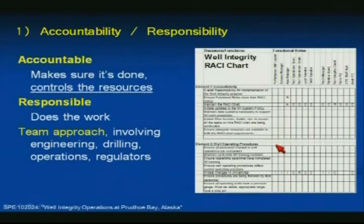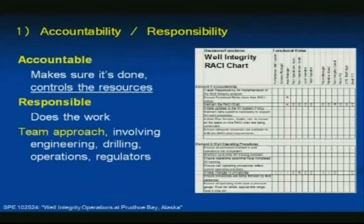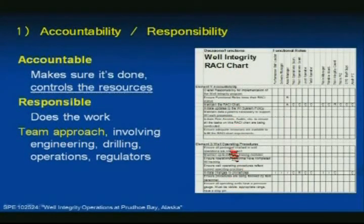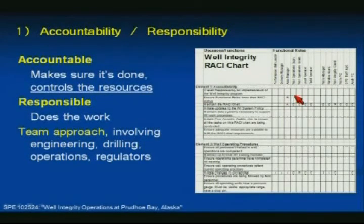Accountability and responsibility: the accountable person makes sure it gets done and, more importantly, they control the resources. What you'll hear from responsible people — the ones who do the work — is that they have a full plate. That accountable person ensures there are enough resources to get things done. There are a lot of tasks associated with managing a well-integrity program. We use RACI charts — Responsible, Accountable, Consulted, Informed — to ensure all tasks are identified and there is clear assignment of who's going to do them. This is very helpful in large organizations, especially where there's a lot of movement of people between teams.